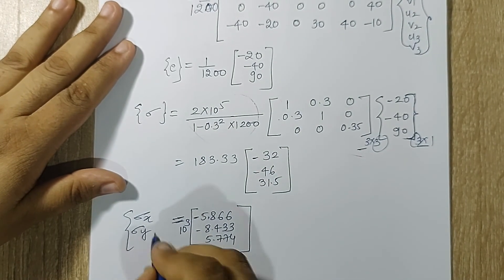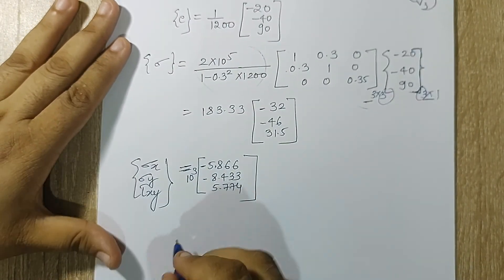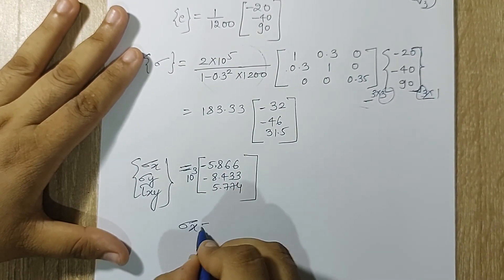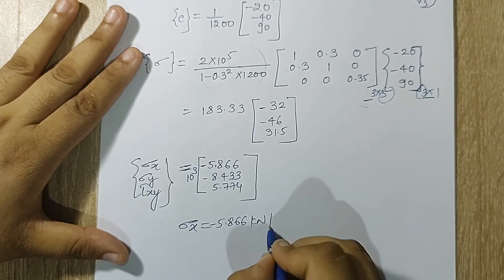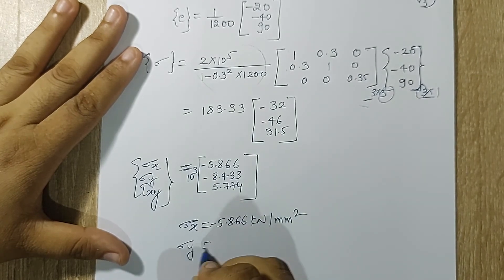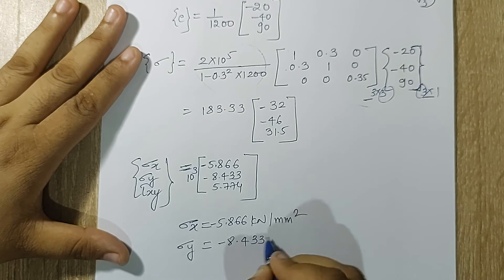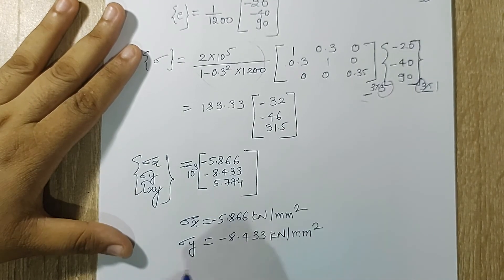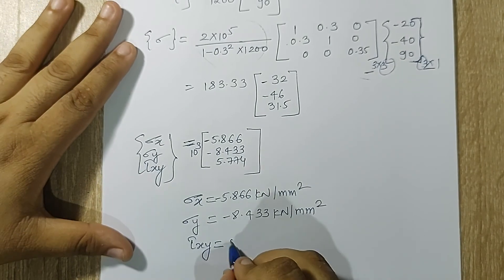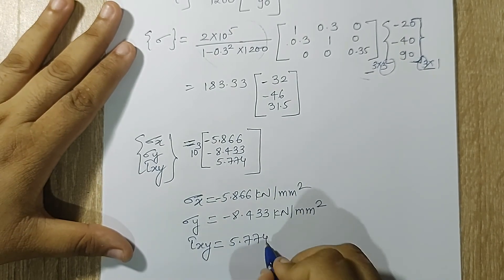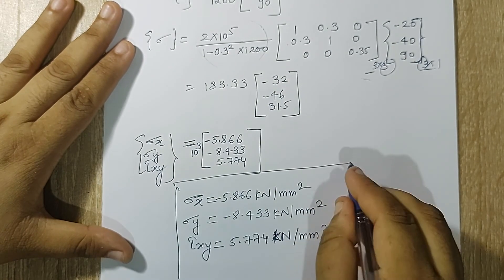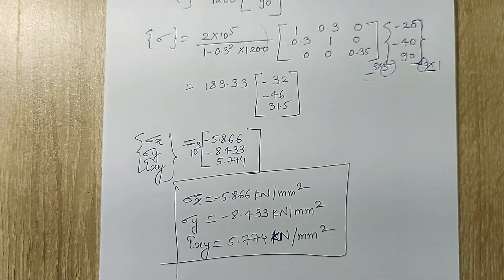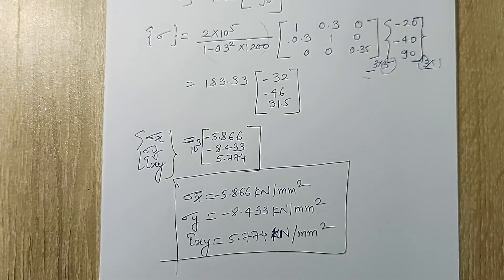These are the stress components: sigma x = minus 5.866 kN/mm², sigma y = minus 8.433 kN/mm², and tau xy = 5.774 kN/mm². This is how the numerical is solved. I hope you have understood the solution. With this I end the session — see you in the next session, thank you.